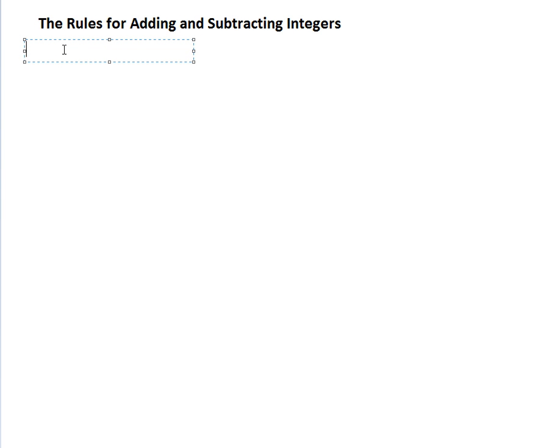The rules for adding and subtracting integers. First, we have the positive rule, which says two like signs become a positive sign.